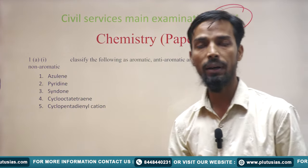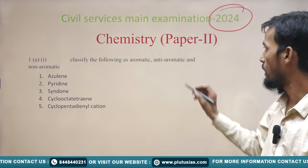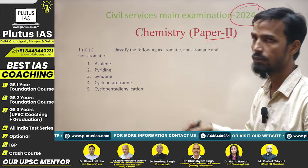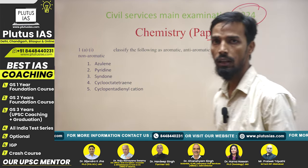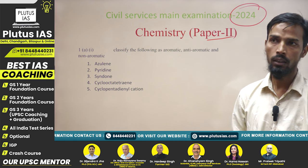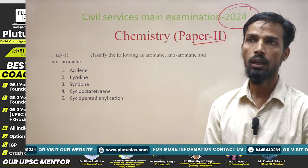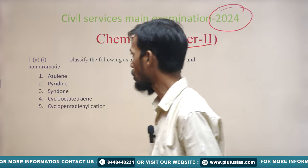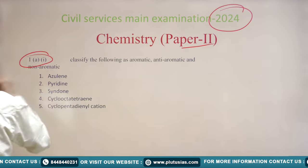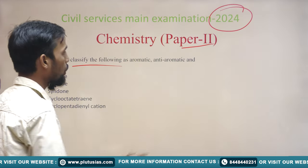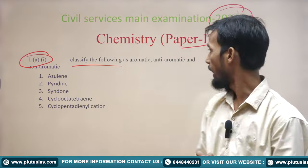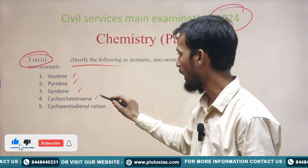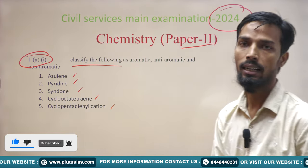As we know, there are two papers of this UPSC exam — optional paper 1 and paper 2. Today we will discuss paper 2, which consists of 8 questions. We will start with question 1, and in this whole series we will discuss all the questions of this year and of previous years also. Question 1 part (a) says: classify the following as aromatic, anti-aromatic, and non-aromatic compounds — Azurine, Pyridine, Syndone, Cyclooctatetraene, and Cyclopentadienyl cation.